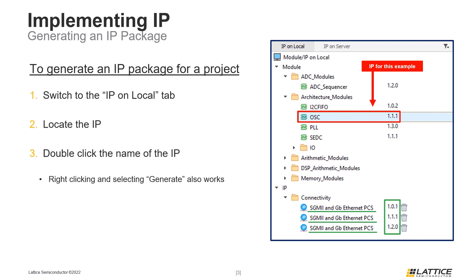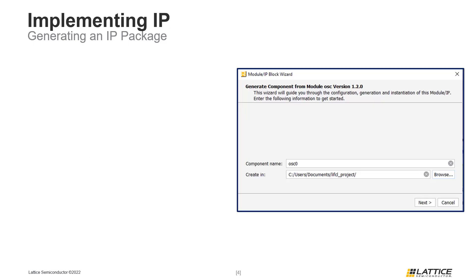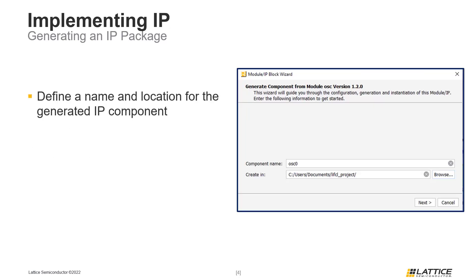Doing this will open the window for generating an IP package component. In the first page of the Generate Component window, users will have to define a name for the IP they are generating. The name users select here is what the top module of the generated IP will be called. Once a name has been defined, users will have to select a location for their IP component to be generated. By default, new IP components are generated to the folder of the active project implementation. Click Next to continue generating the IP component.